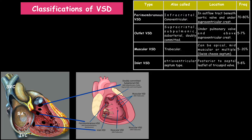The next VSD is the muscular VSD, also called trabecular VSD. It can be apical, mid-muscular, or multiple. When it is small, multiple, and close together, it gives the appearance of Swiss cheese and is called Swiss cheese septum. The frequency of this muscular VSD is around 5 to 20%. The next VSD is the outlet VSD, located superior to the crista ventriculares, and hence it is called supracrystal VSD. It is located under the pulmonary valve and above the supraventricular crest. The frequency is around 5 to 7%.